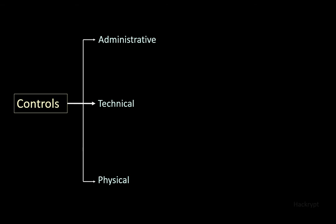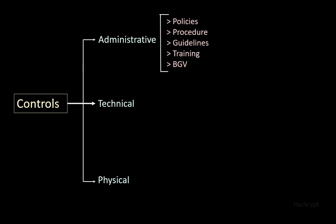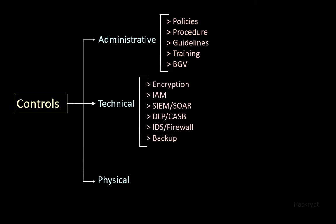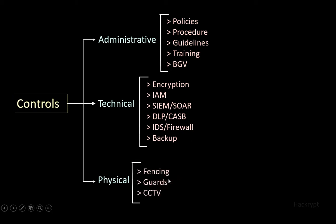Examples of administrative controls are policies, procedures, guidelines, training, and background verification. Technical controls include encryption, identity access management, security incident and event management, security orchestration automation and response, data loss prevention, cloud access security broker, firewall, and backup. Physical controls include fencing, guards, and CCTV.